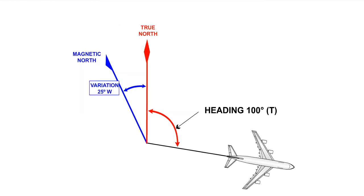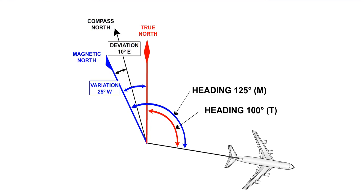Conversely, for an easterly deviation, we would subtract from the magnetic direction, as seen in the example on screen now. Remember to apply the rule to magnetic to obtain compass and not the other way round.